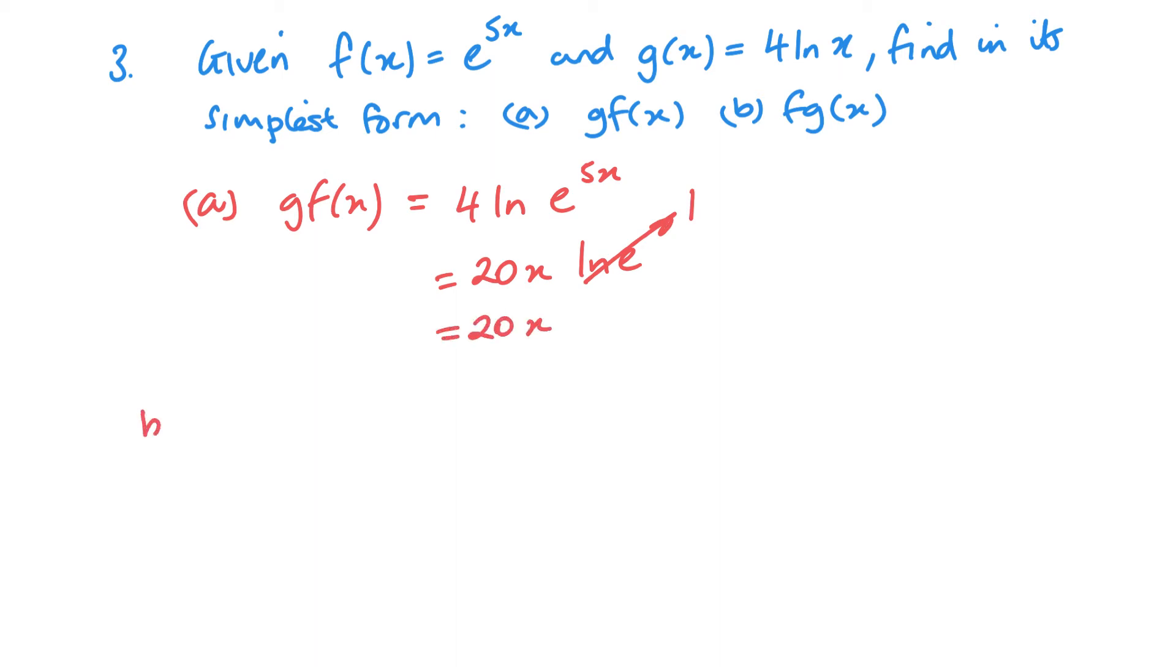Let's look at b. The other way round. fg of x. So this one e to the 5 times 4 ln x. So this is e to the power 20 ln x. So this is just x to the power 20.